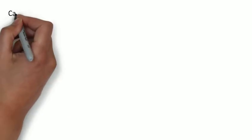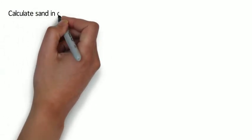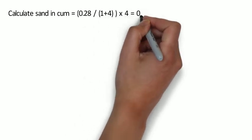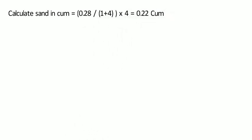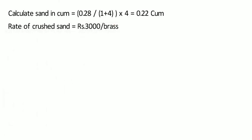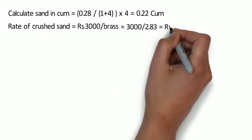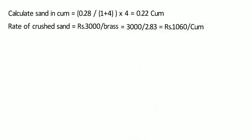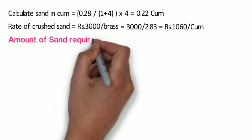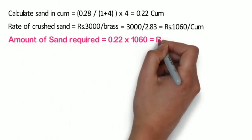Now we will calculate sand in cubic meters. The formula is 0.28 ÷ (1 + 4) x 4 = 0.22 cubic meter. Sand is 4 times the cement in the proportion 1:4. Considering rate of crushed sand at 3,000 rupees per brass, that is 3,000 ÷ 2.83 = 1,060 rupees per cubic meter. Amount of sand required shall be 0.22 x 1,060 = 237 rupees.